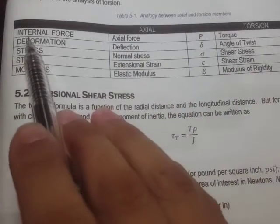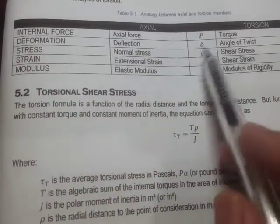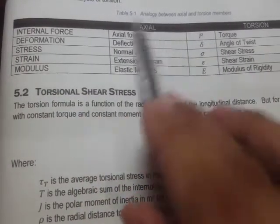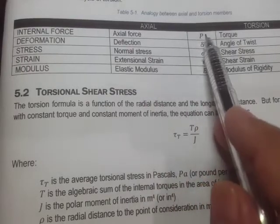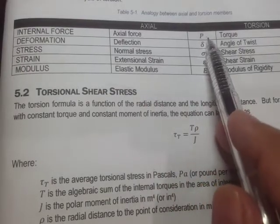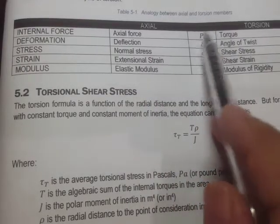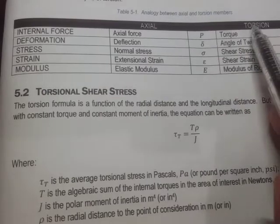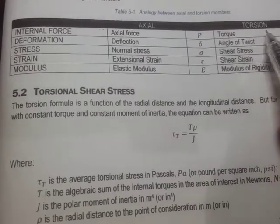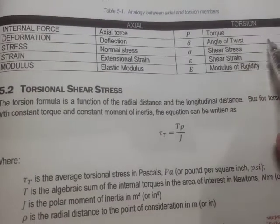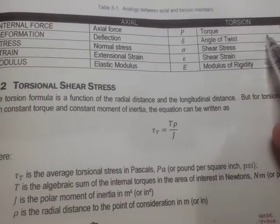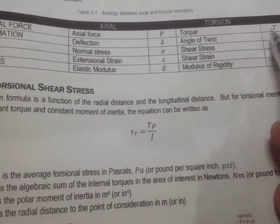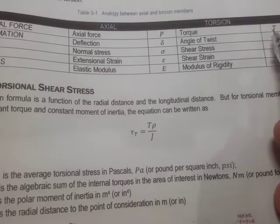In terms of internal force, for axial members this is P or N — that's the internal load. But for torsion, the internal force is the torque, and this is the symbol T.